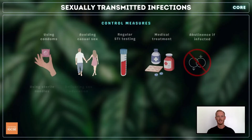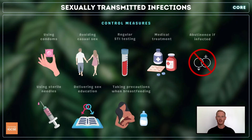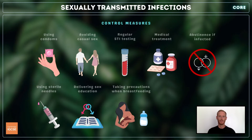There are several preventative measures that can significantly reduce the spread of sexually transmitted infections. Individuals can use condoms, which act as a barrier against pathogens, limit the number of sexual partners they have, and get tested for STIs following unprotected sex.